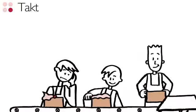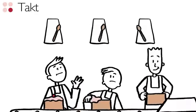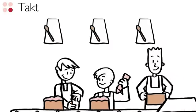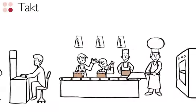The third is takt. It's the heartbeat of a Lean system. It's how fast you need to manufacture a product to meet customer demand. Takt allows us to balance work content, achieve a continuous flow, and respond flexibly to changes in the marketplace.